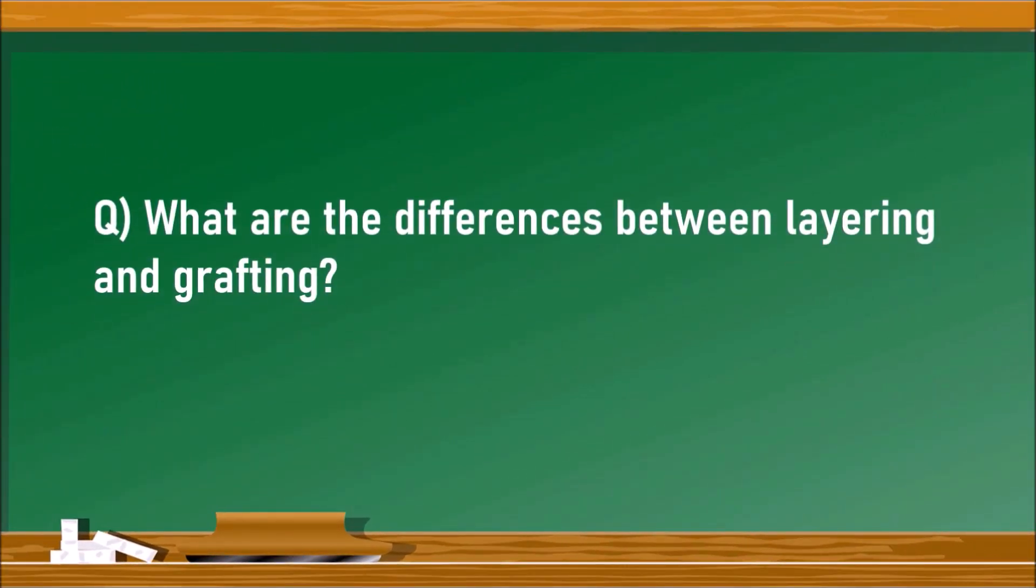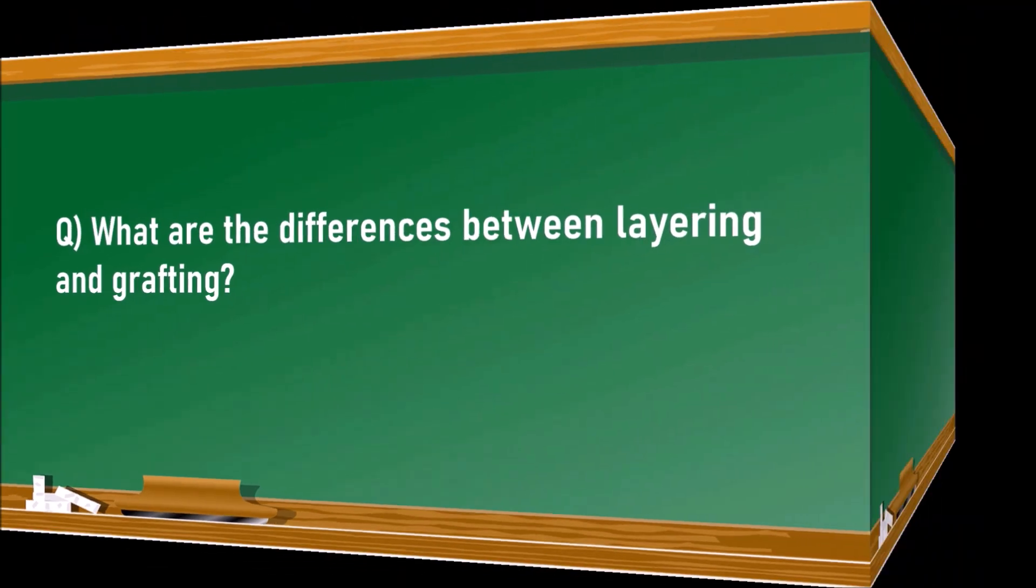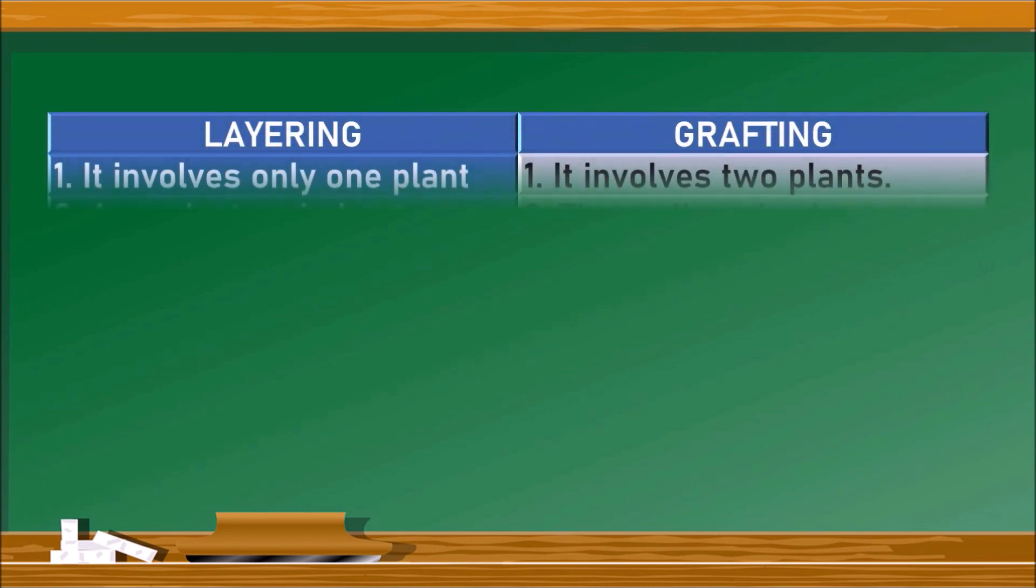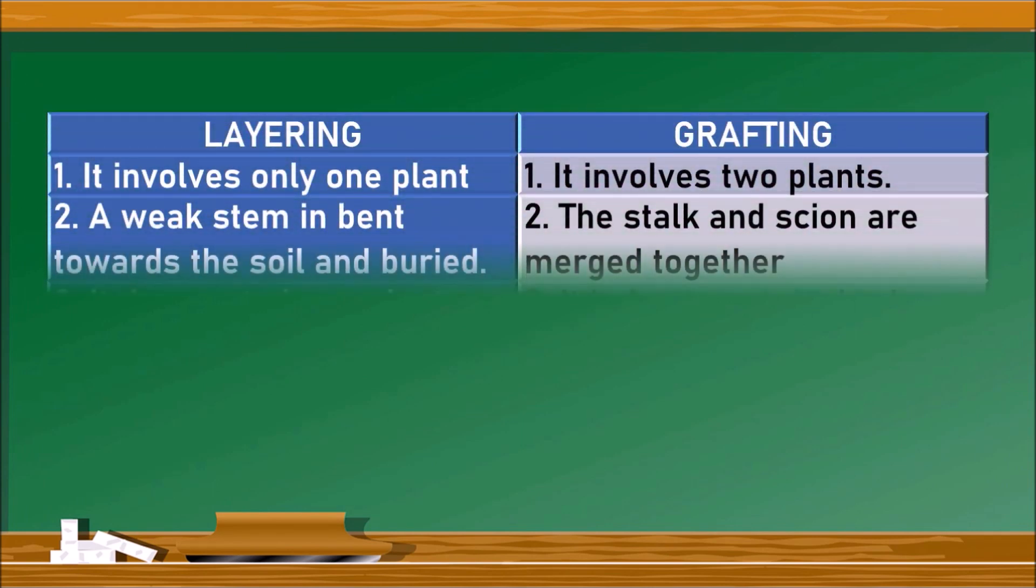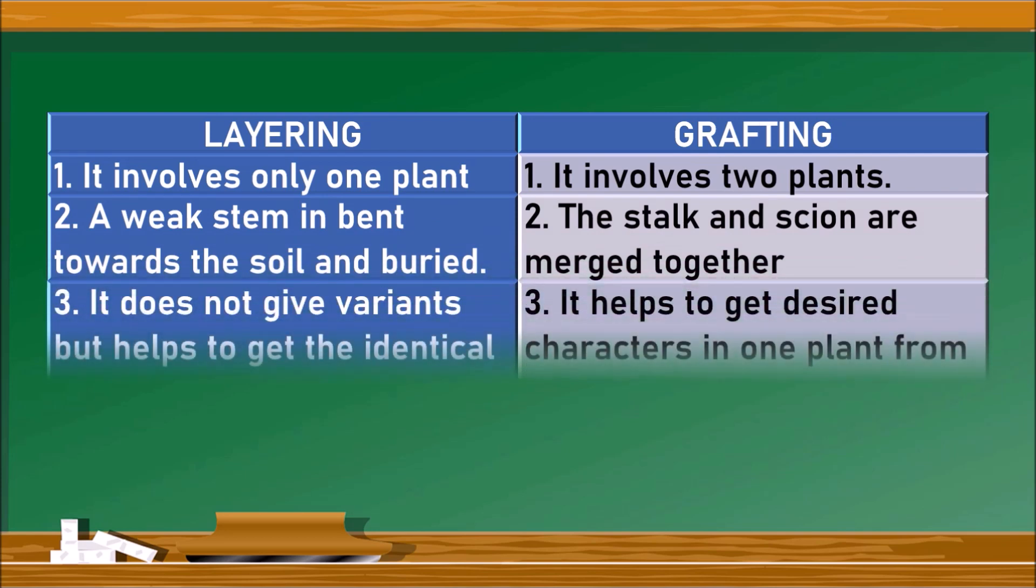What are the differences between layering and grafting? These both are artificial vegetative propagating methods. Let us draw a table with layering and grafting on either side. Layering involves only one plant. But grafting involves two plants. We merge the two plants.